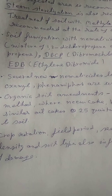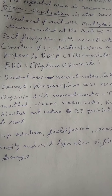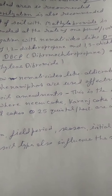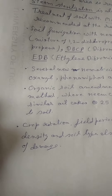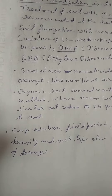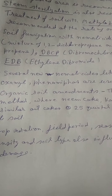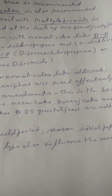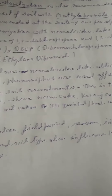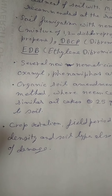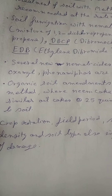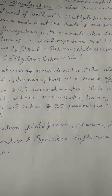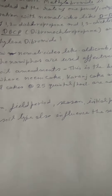DBCP is dibromochloropropane and EDB is ethylene dibromide. There are also some newer nematicides such as LD Crab, Oxamil, and Fenamiphos, which are also used effectively.